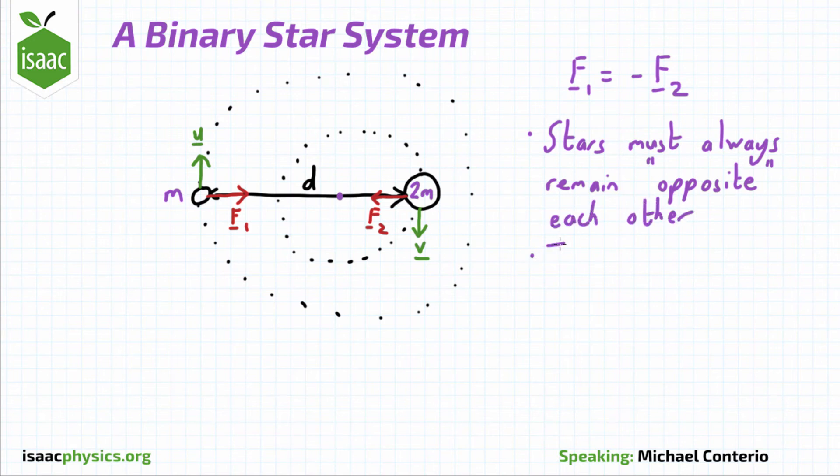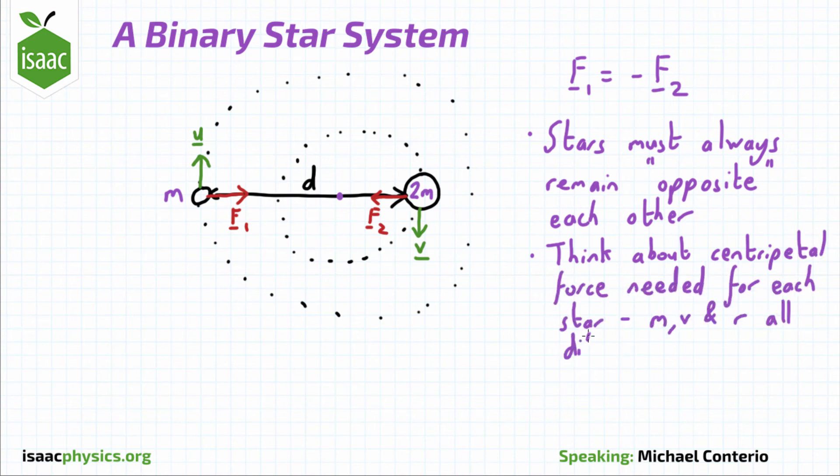Think about the centripetal force needed for these orbits. For each star, the mass, speed and radius of orbit are all different. Use all of this to work out the time period of the star's orbits.